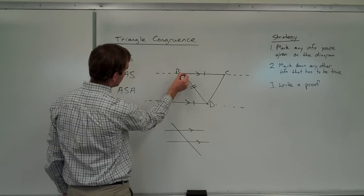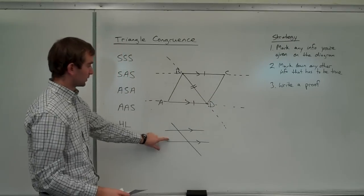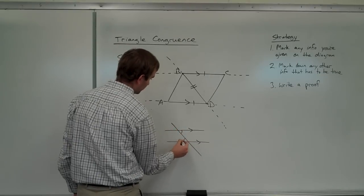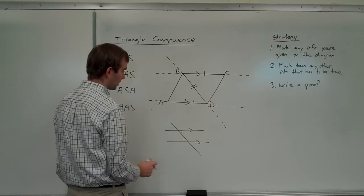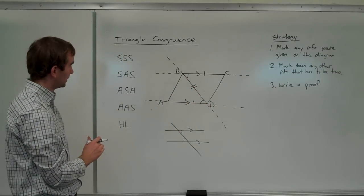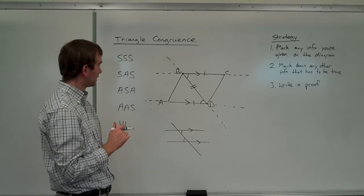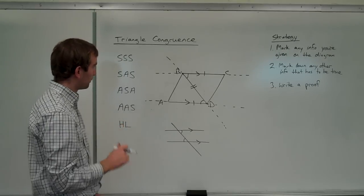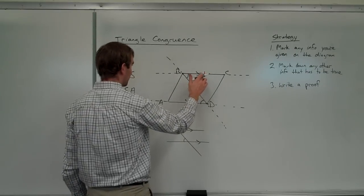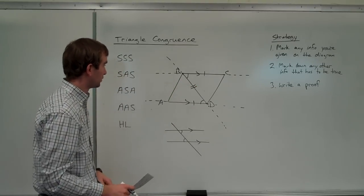If you have a tough time visualizing it, extend the parallel lines — that's something you can do to make it easier to see. Our transversal in this case runs through both triangles. Alternate interior angles are always congruent when you have two parallel lines, and that's this angle and this angle. So I can say those two angles have to be congruent because they are alternate interior angles. Now I've got a side, an angle, and another side — side, angle, side. That's one of my postulates, so I know enough to show those two triangles have to be congruent.